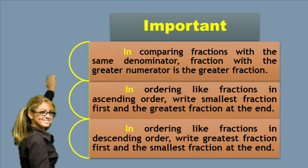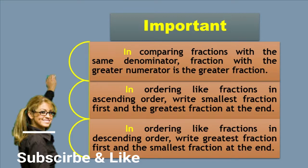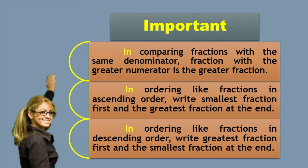Now, this slide in front of you is very important. Firstly, in comparing fractions with the same denominator, the fraction with the greater numerator is the greater fraction. Secondly, in ordering like fractions in ascending order, write the smallest fraction first and the greatest fraction at the end. And lastly, in ordering like fractions in descending order, write the greatest fraction first and the smallest fraction at the end.